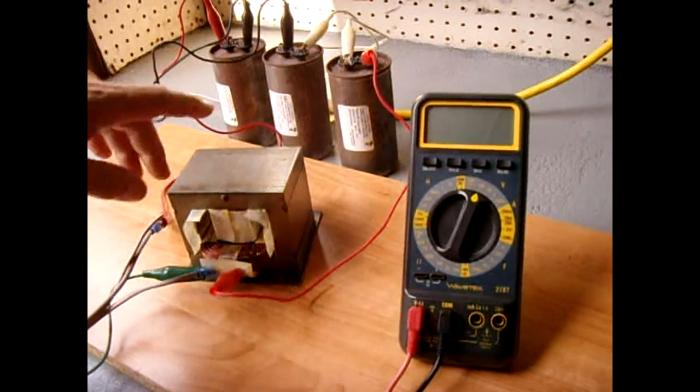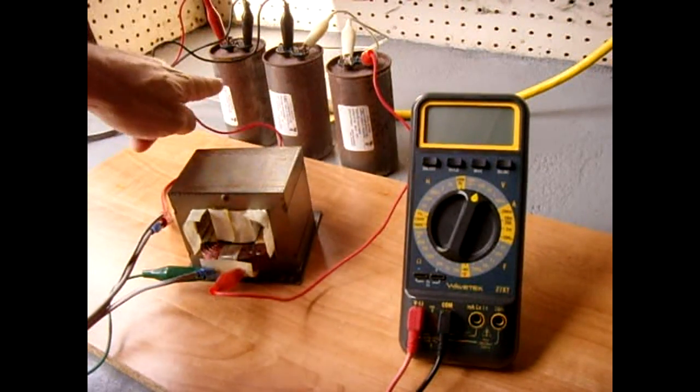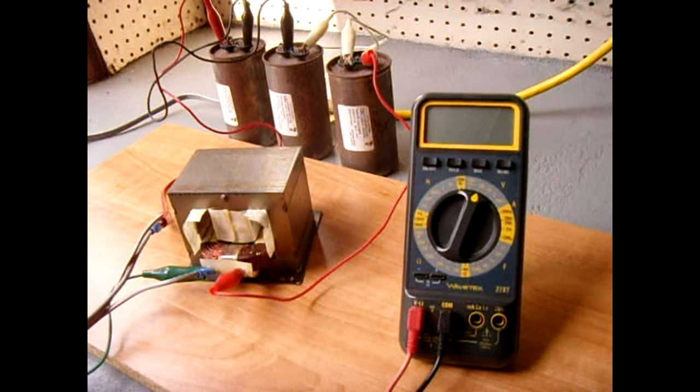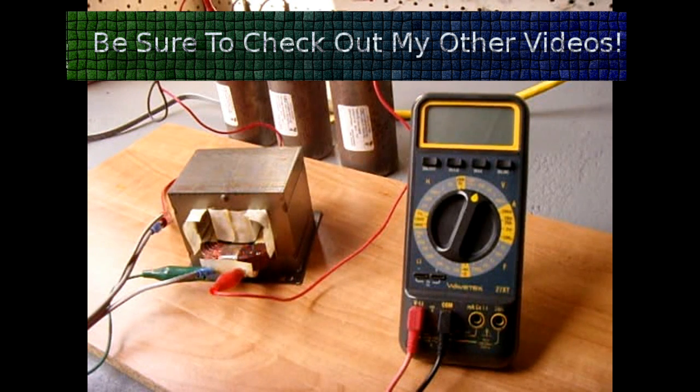And to reduce the amount of current flowing into this transformer so it stays a lot cooler while demonstrating, I'm flowing through three 100 microfarad 370 volt capacitors connected in series, so you have an effective capacitance of around 33 microfarads. That's going to limit the current into that winding, but everything will still work perfectly for me to show you this demonstration.